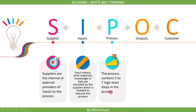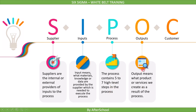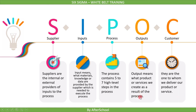The process contains five to seven high-level steps. Outputs are the products or services created as a result of the process. The last element is the customer — the one to whom we deliver our products or services. This completes the breakdown of SIPOC.